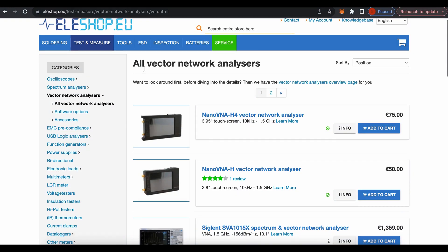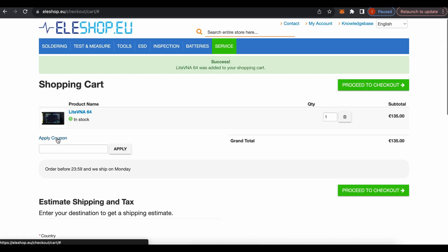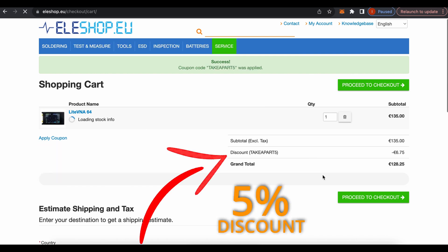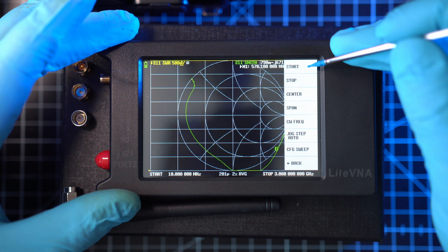If you want a genuine Nano or LiteVNA, head to eleshop.eu and use coupon code TakeApart5 at checkout to get 5% discount, or use the first link in description. But first, go to menu,